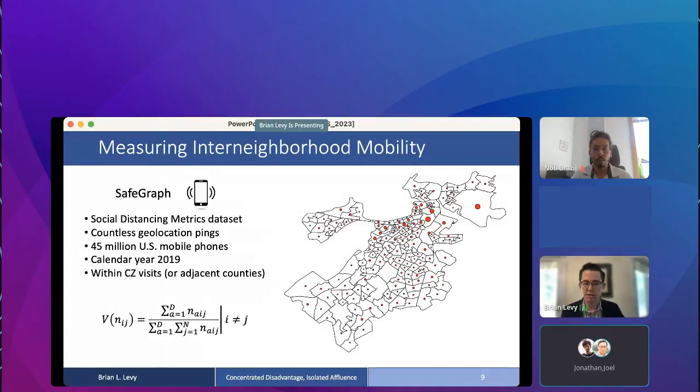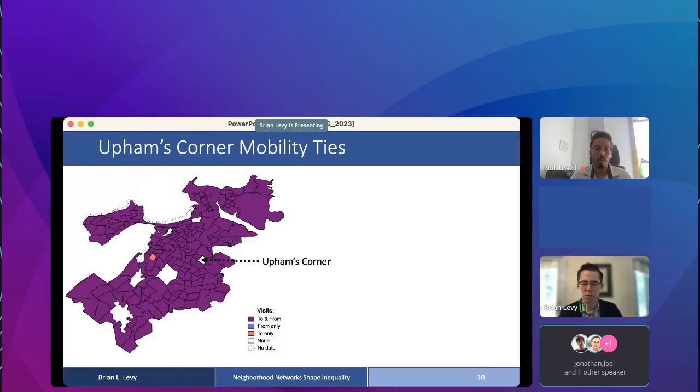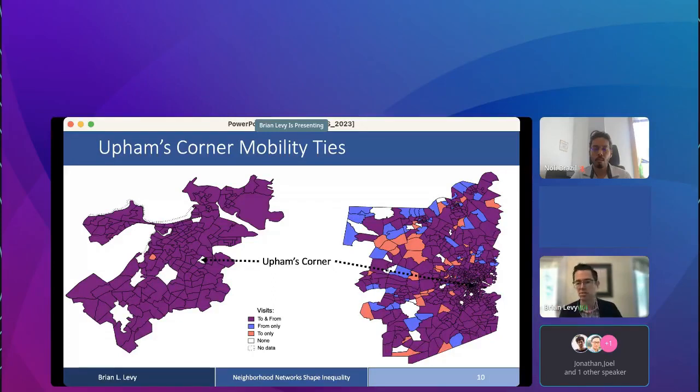For example, this is the visit density in the city of Boston. This pattern makes a lot of sense. Downtown Boston tends to get the most visits along with the Logan Airport. If you look at one neighborhood, Upham's Corner is an illustrative neighborhood in Boston. Its residents tend to visit and be visited by every other neighborhood in the course of 2019. There's really no neighborhood in Boston that it's not connected to. If you look at the greater Boston metro area, 90% of neighborhoods are visited or send visits to Upham's Corner. So there's a large degree of connection across neighborhoods.